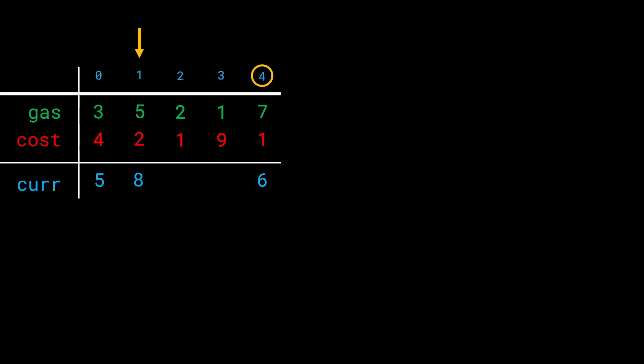At station 1 we do 5 + 5 - 2: 5 is the current tank, 5 is the gas we get, and 2 is the cost — giving us 8. At station 2 we do 8 + 2 - 1 giving us 9. Then at station 3 we do 9 + 1 - 9 giving us 1.